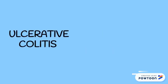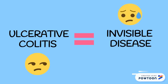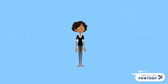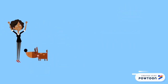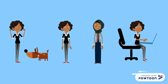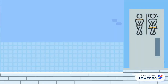Having ulcerative colitis can be difficult and frustrating to explain to people. This is because the condition is often referred to as an invisible disease. To the outside world, a person with the chronic illness may look perfectly healthy as they complete tasks such as walking their dog, socializing with their peers, or completing an assignment for work.